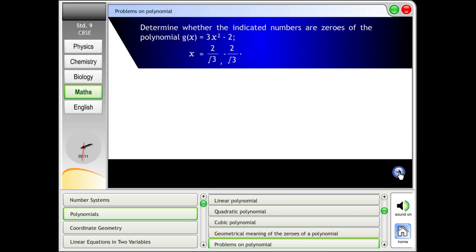Determine whether the indicated numbers are zeros of the polynomial g(x) = 3x² - 2, x = 2/√3, -2/√3. Solution.